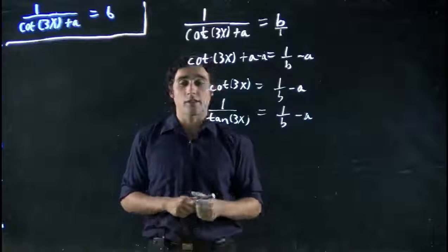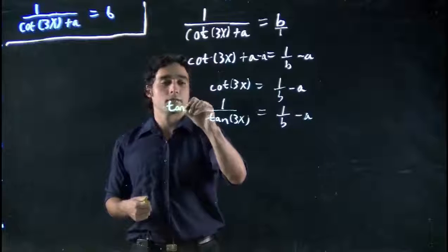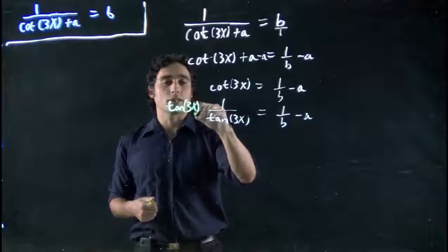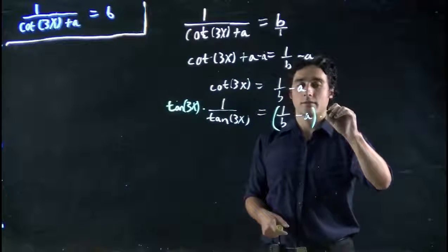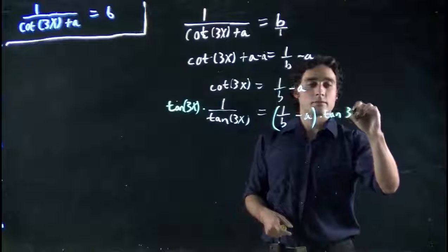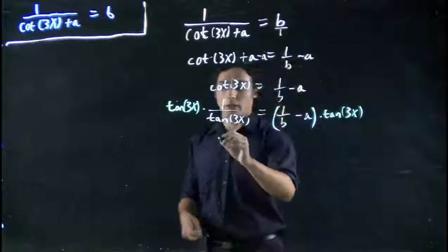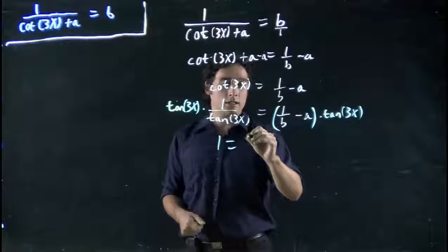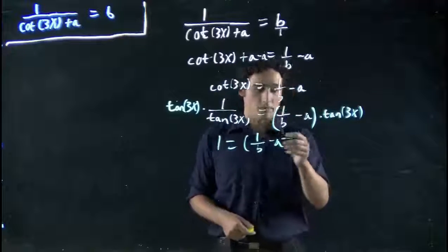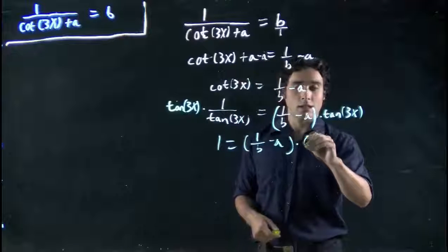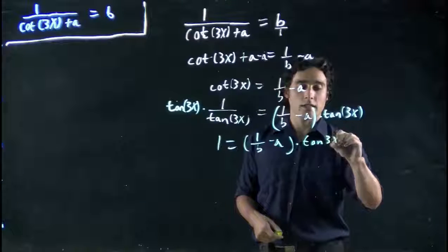So in this case, I'm going to multiply both sides by tan 3x. Multiplying both sides to cancel it on this side. So I got 1 equals this mess over here, 1 over b minus a, which again I could combine if I really wanted to, times tan of 3x.